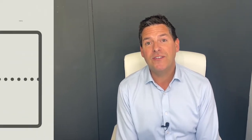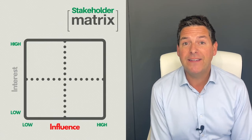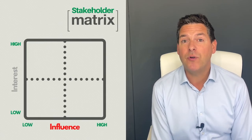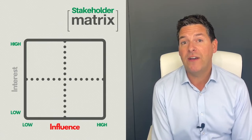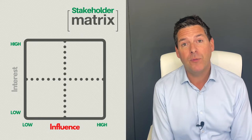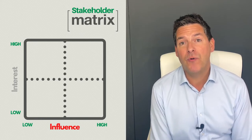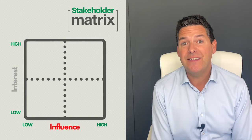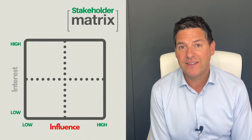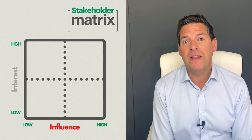You need to start with your matrix — put it up on the wall. Here is a graphic that explains what your matrix needs to cover. Along the bottom is influence, from low to high. What we mean by influence is how much this person or group of people are needed to make your project a success.